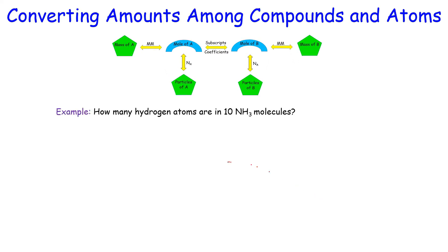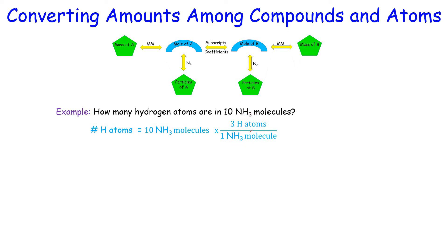Another example: how many hydrogen atoms are in 10 ammonia molecules? We start from 10 ammonia molecules and convert to hydrogen atoms. One ammonia molecule contains 3 hydrogen atoms, so the ammonia molecules cancel, giving us 30 hydrogen atoms. So 10 ammonia molecules gives us 30 hydrogen atoms.